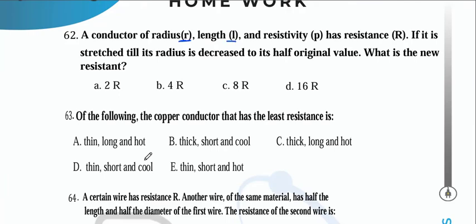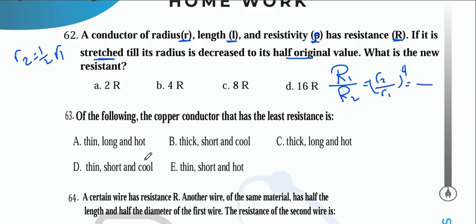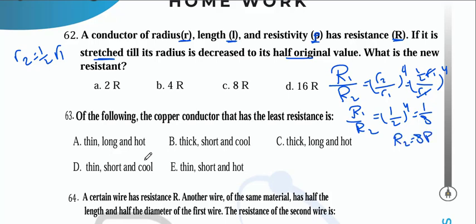A conductor of radius r, length L, resistivity ρ, resistance R is stretched until its radius is half the original (r2 = ½r1). Using R1/R2 = (r2/r1)⁴ = (1/2)⁴ = 1/16. So R2 = 16·R1. Wait — R1/R2 = (r2/r1)⁴ for stretched wire gives (½)⁴ = 1/16, meaning R2 = 16R1.